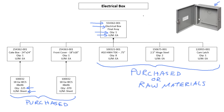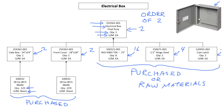If we have an order of two, I'm going to get two electrical boxes. To make two electrical boxes in my factory, I'm going to need to make two cake boxes and two front covers. I'll have to reserve 16 tech screws, four hinges, and two cam latches. That feeds down into my raw materials for the sheet metal parts too, so I'm going to reserve 0.25 sheets for this part and 0.14 sheets for the front cover.